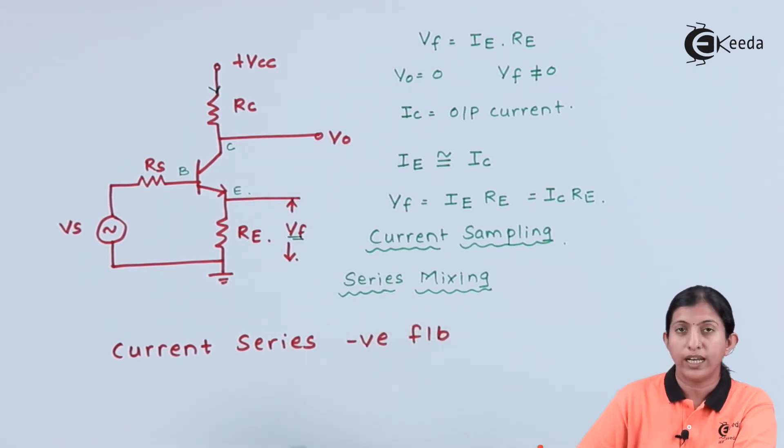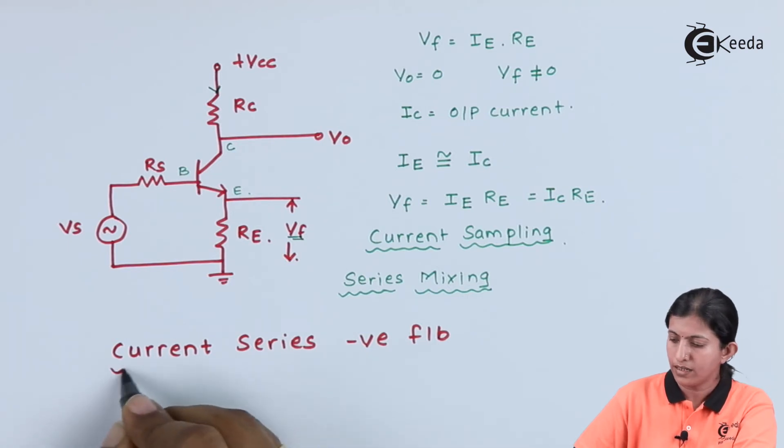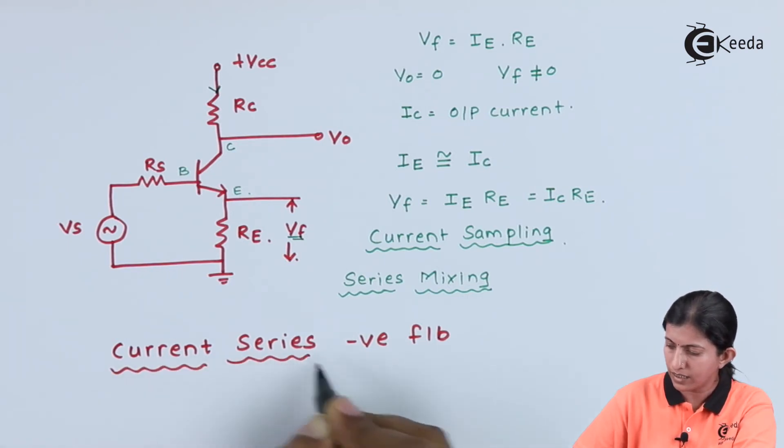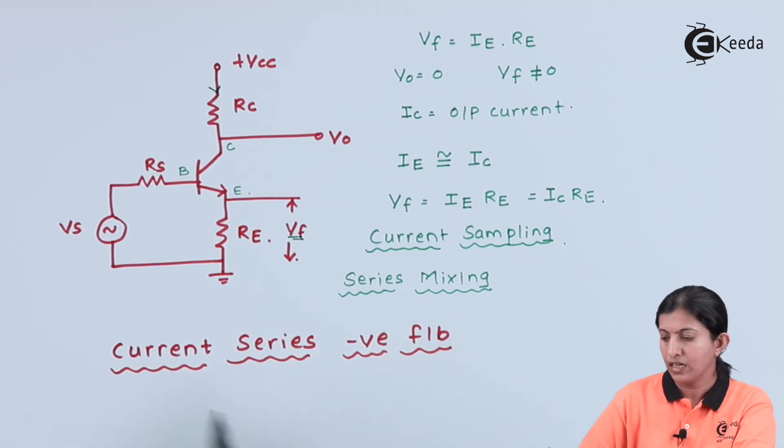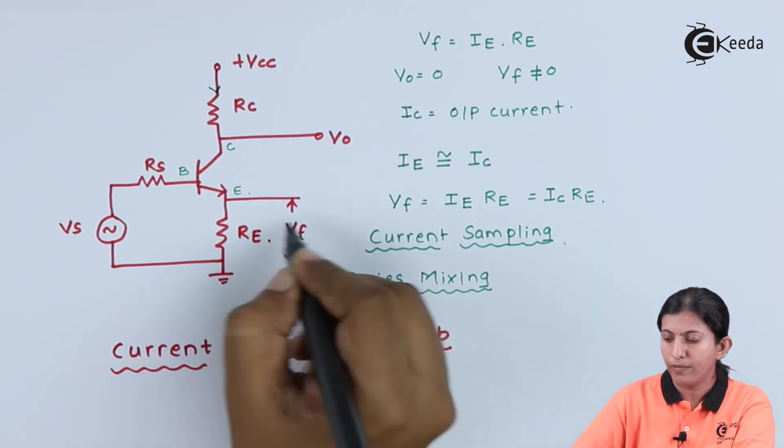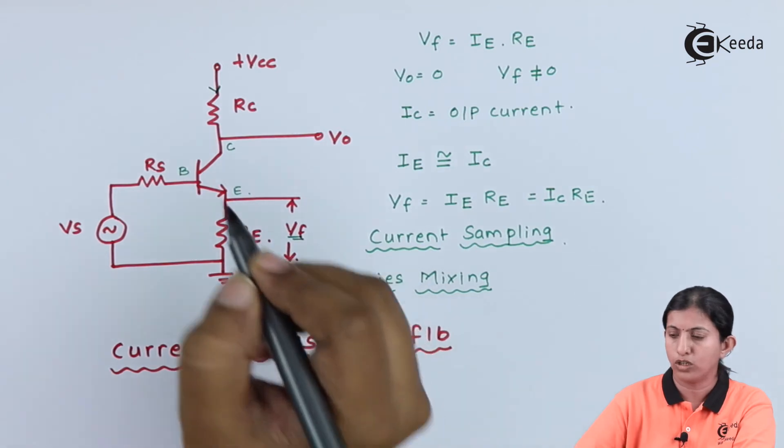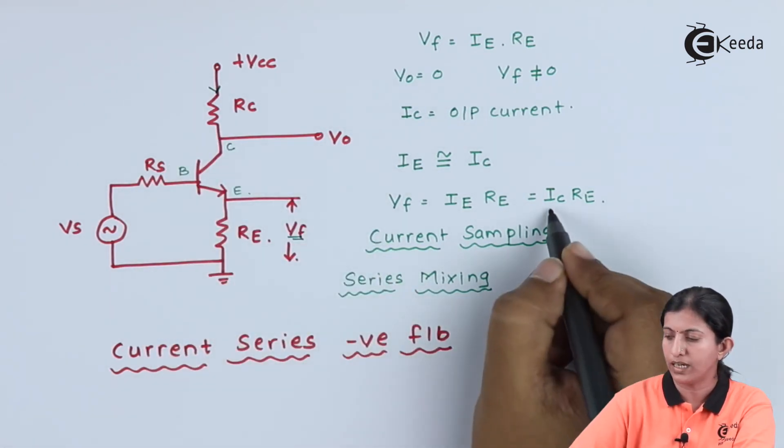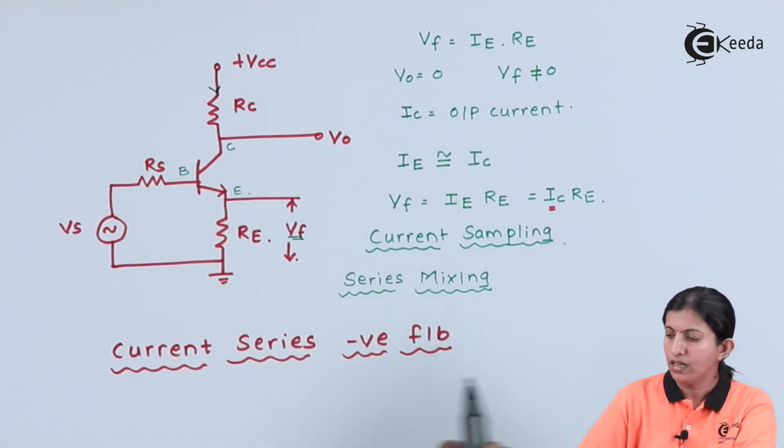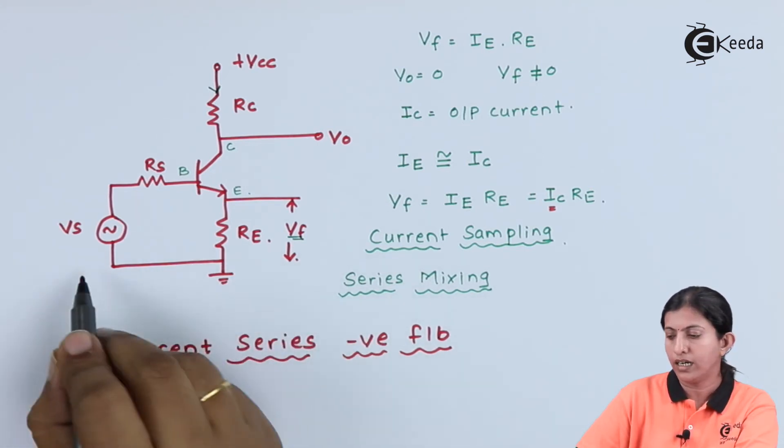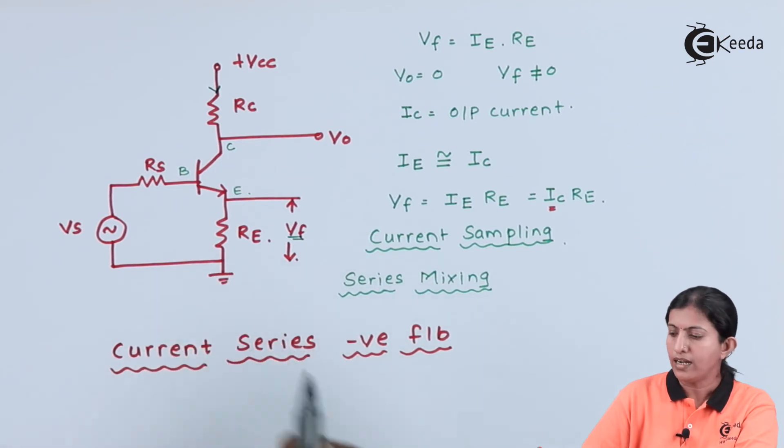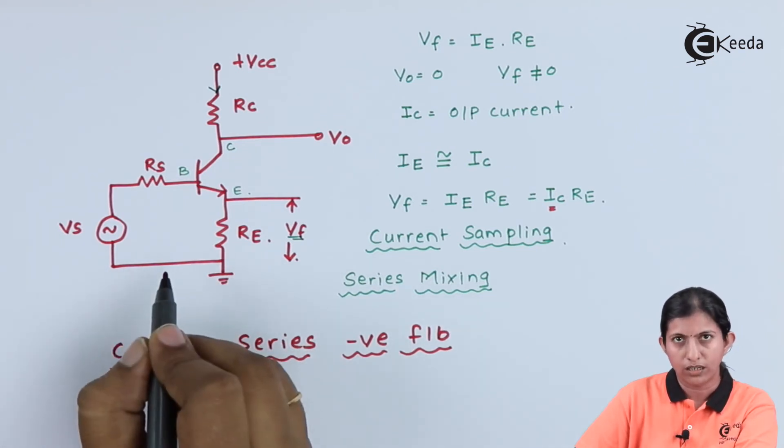So, the name of this amplifier is Current Series Negative Feedback Amplifier. Current because the feedback voltage depends upon the output current which is nothing but Ic. And Series Mixing because Vf and Vs are connected in series.